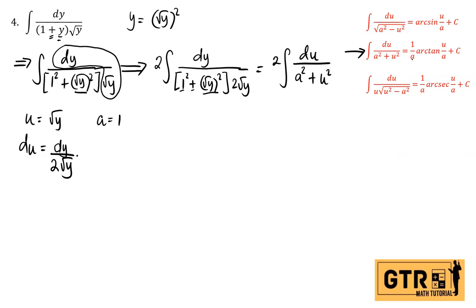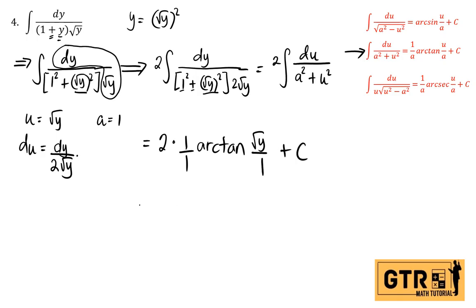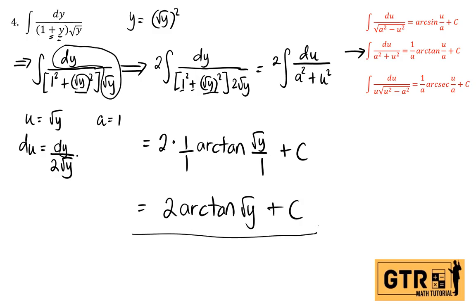Applying the formula, the answer is 2 times (1/a) arctan(u/a), where a equals 1 and u equals √y. That gives 2 times (1/1) arctan(√y / 1) + c. Simplifying, the final answer is 2 arctan(√y) + c.